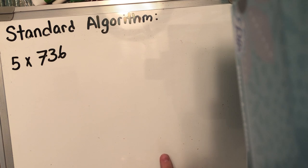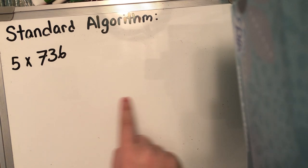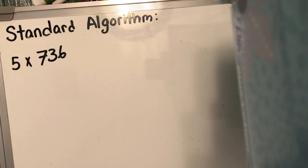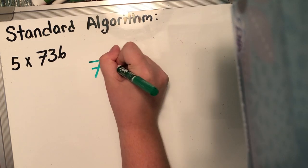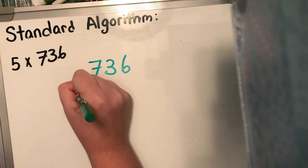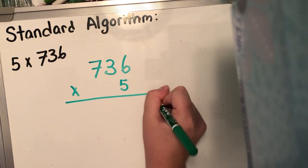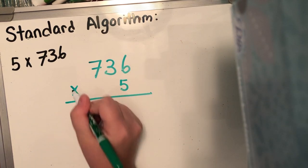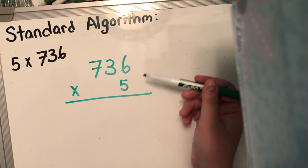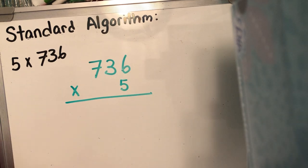Remember in standard algorithm, we're just gonna have one answer in a line. We're not gonna have anything else. So I'm gonna go ahead and write down the problem. Remember in standard algorithm, we are gonna be carrying and adding things. So you wanna give yourself enough space, which is why we do it this way, lining it up vertically.